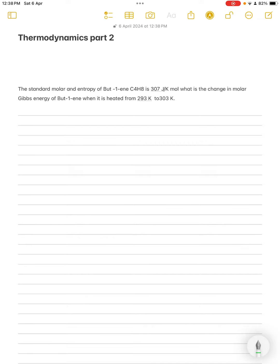We have to find out the Gibbs free energy change in molar Gibbs free energy. The value of standard molar entropy is given, which is 307 joules per Kelvin mole, and we have to find out the change in Gibbs free energy, delta G.